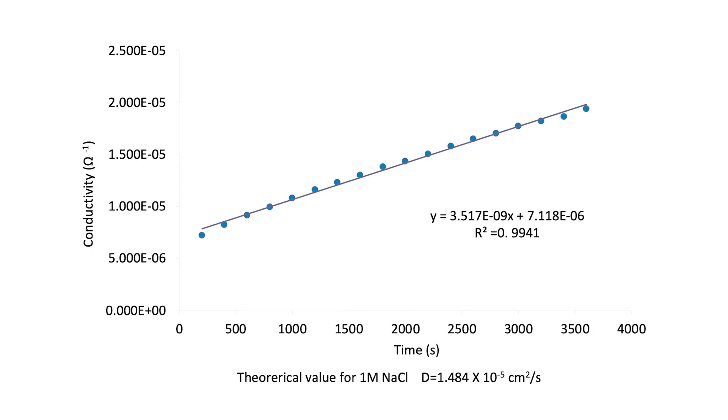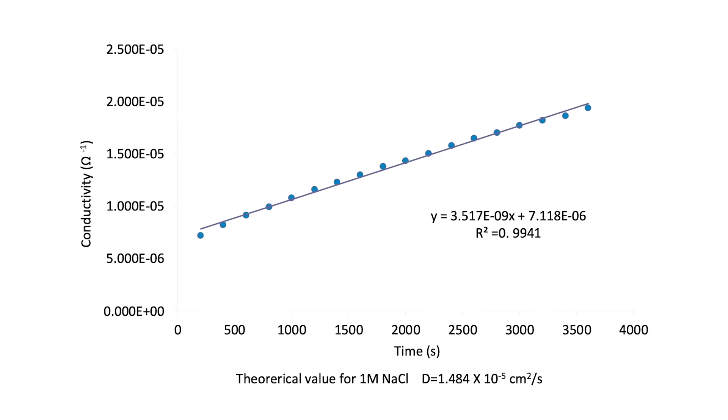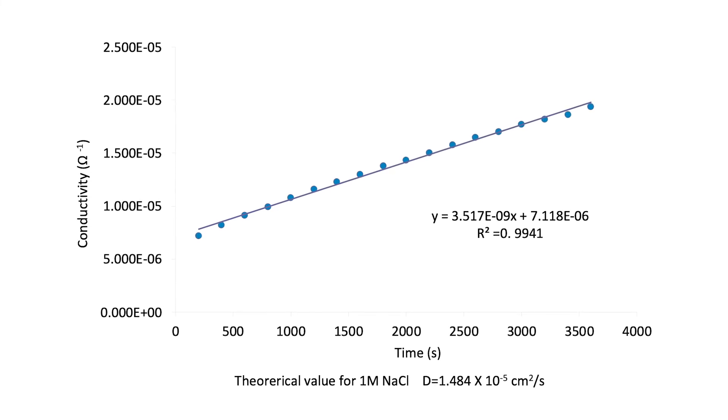The rate of change of conductivity with time is obtained by plotting conductivity, which has units of Siemens, versus time, which has units of seconds.